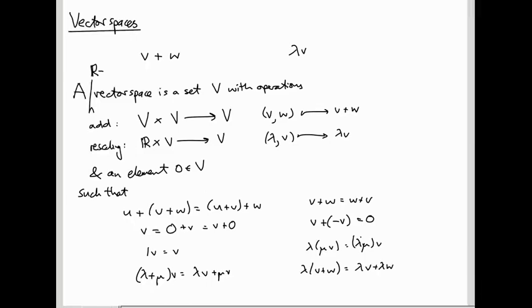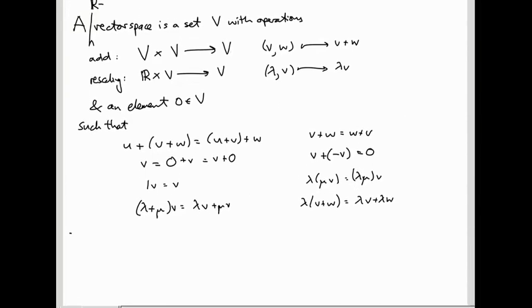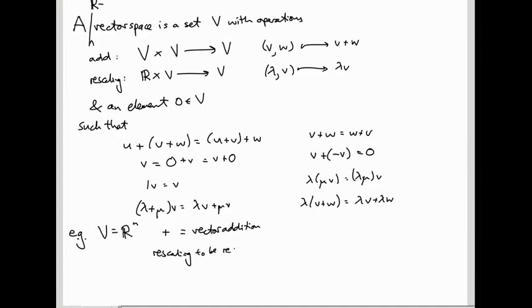A vector space is just any set with any operations that satisfy this set of axioms. In particular, if you take the set to be Rn, and you take addition to be ordinary vector addition, and rescaling to be rescaling, then they satisfy these axioms — you can check they will hold true. But there are more general things you can do.